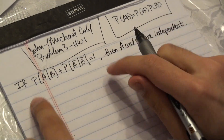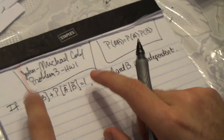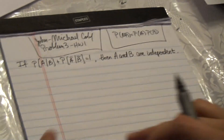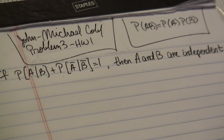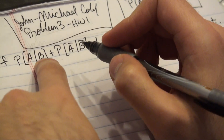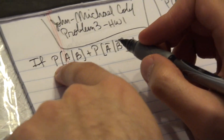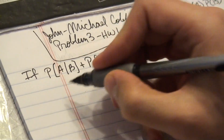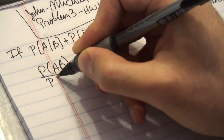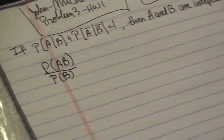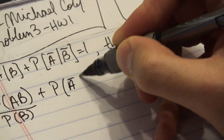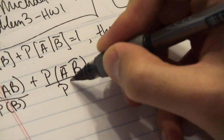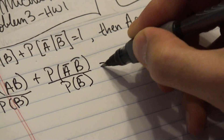Why don't we start with this equation. I'm going to start with this equation and try by working and massaging the equation a bit to show this. By the definition of conditional probability, I could rewrite this part here as probability of AB over probability of B. And similarly, for this second part, I can write probability of A-not, B-not over probability of B-not. And this equals 1.